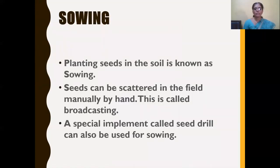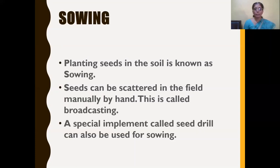The second agricultural practice is sowing. Planting seeds in the soil is known as sowing. Sowing can be done manually or by using an implement. Seeds can be scattered in the field manually by hand, but the disadvantage is that in some places there will be overcrowding of seeds. When crops are sown too close together, they compete for nutrients, sunlight, and air and cannot grow well. To prevent overcrowding, some crops are removed — this process is called thinning.